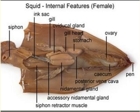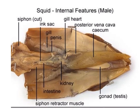Squids are dioecious, meaning there are separate male and female individuals. In the female squid, we can see the ovaries, which are the site of oogenesis and egg development. The oviductal gland secretes a protective shell-like membrane around the eggs. The nidamental gland coats the eggs with a gel that protects and keeps them cohesive. In the male squid, the gonads include the testes, and the penis releases the spermatophore during mating.